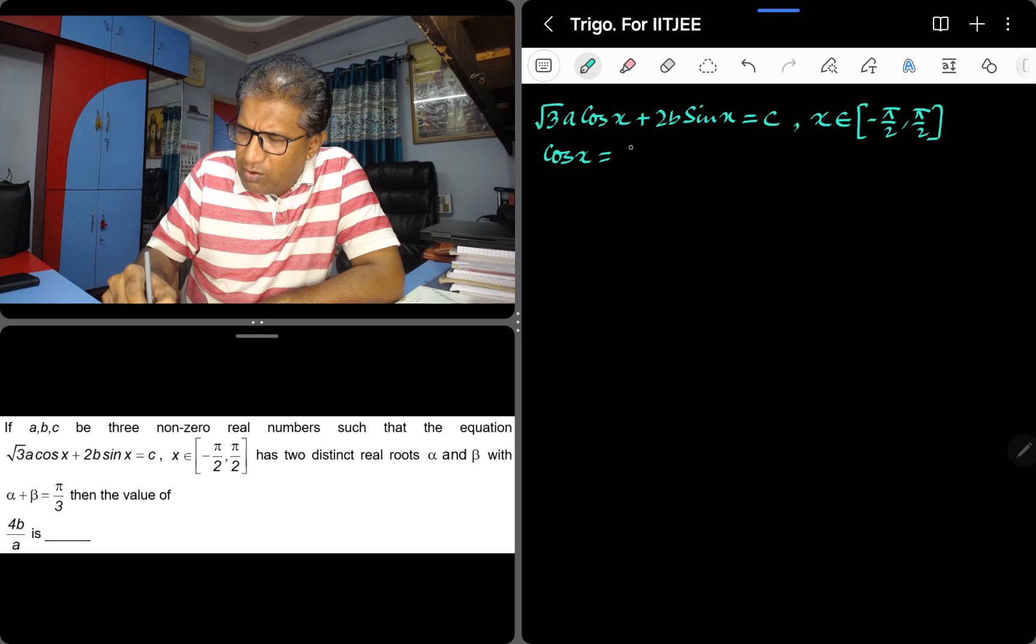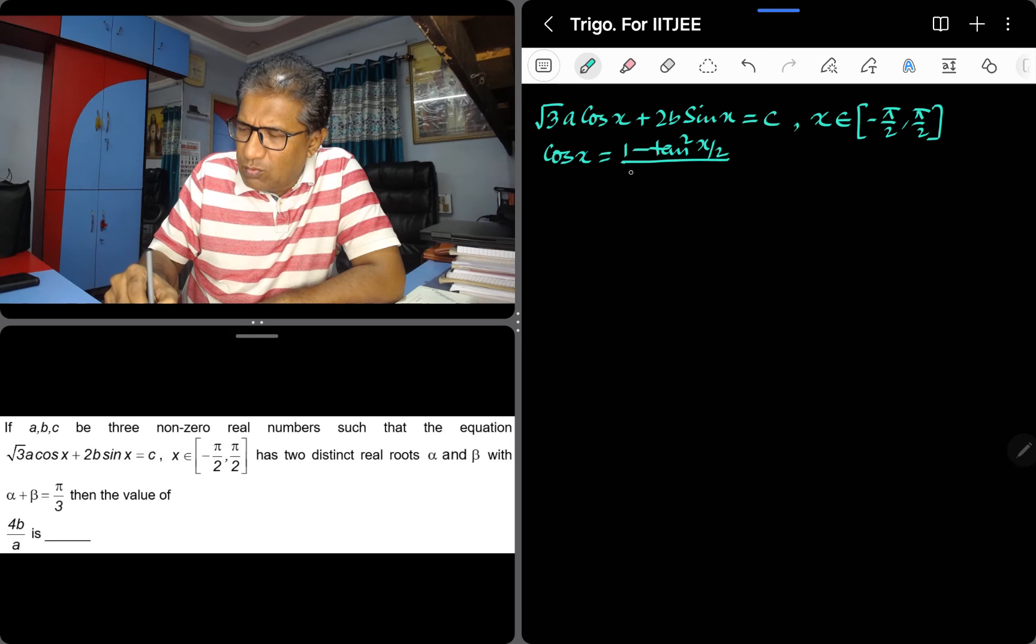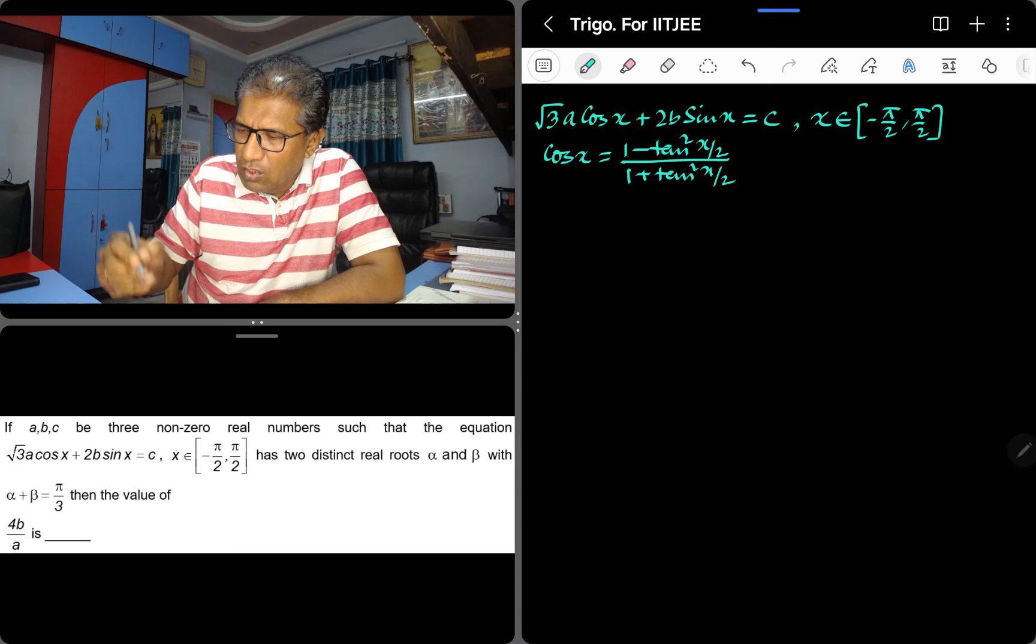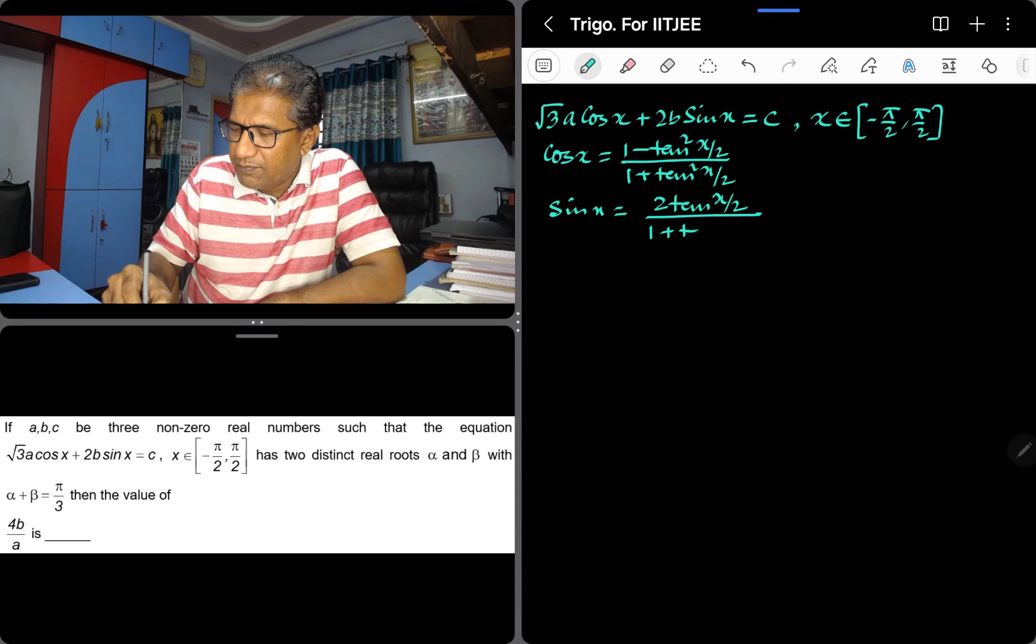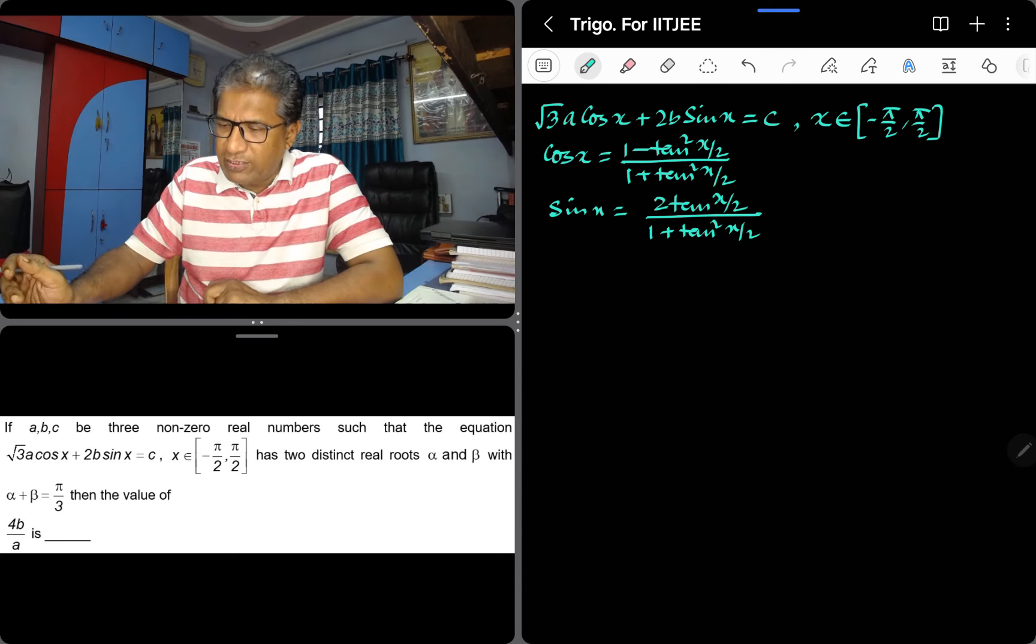Cos x is a formula that we all know: 1 minus tan square x by 2, by 1 plus tan square x by 2. And sin x is a formula in terms of tan: 2 tan x by 2, by 1 plus tan square x by 2.